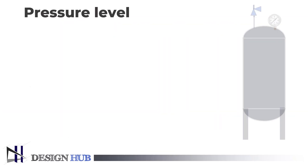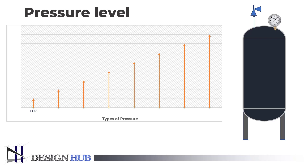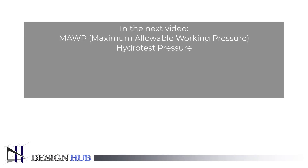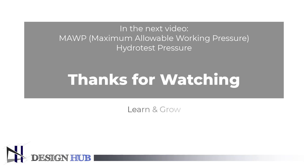At last, I will show you the pressure levels of different types of pressure that a vessel confronts. Operating pressure is 90% of the design pressure, and maximum allowable working pressure is 130% of the design pressure, or it can be equal to the design pressure. We will learn the other two types of pressure — maximum allowable working pressure and hydrotest pressure — in the next video. Thanks for watching. Until then, learn and grow.